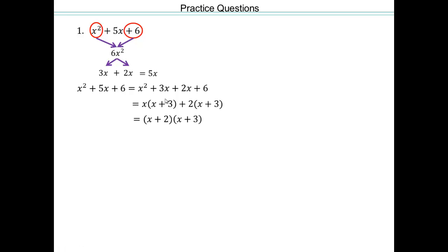Practice and be proficient in this method — that's the method we really want you to learn. The name of that method is factor by grouping. Now for the next example, we have 6x squared, and it will be negative because we have a negative 6. So two numbers multiply to give you negative 6 and add to give you negative 1x — that's negative 3 and positive 2.